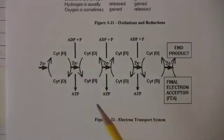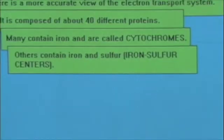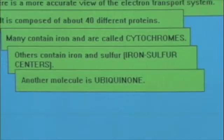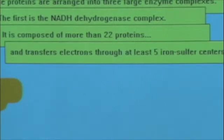Now in reality there are many other components of the electron transport system, a variety of different proteins, and you can see these in an animation which we'll show you shortly. The real electron transport system has many proteins, 40 different proteins, molecules called cytochromes, iron sulfur centers. The proteins become large enzyme complexes arranged within the membrane.